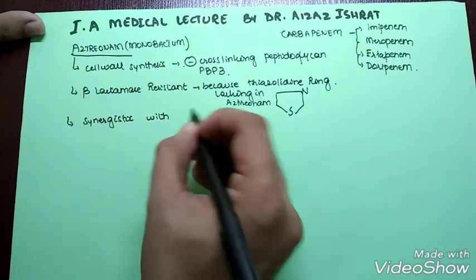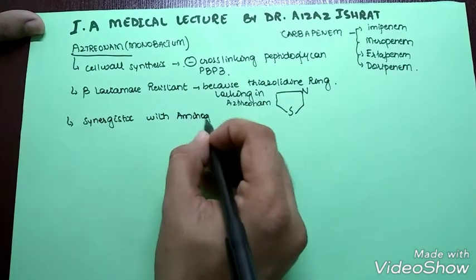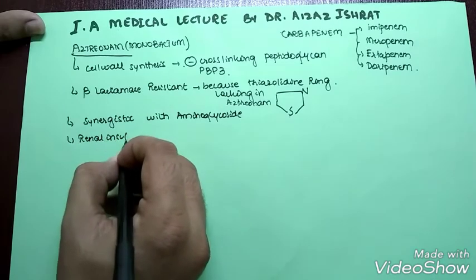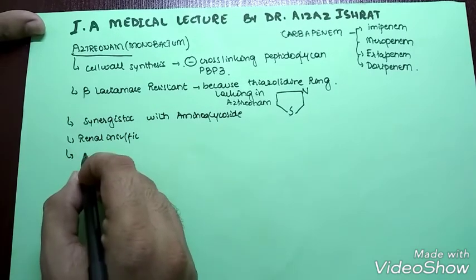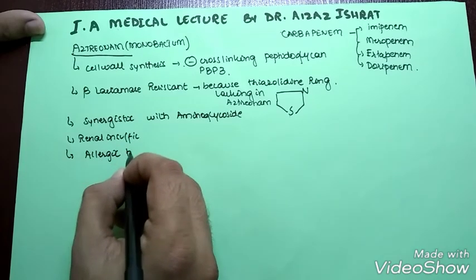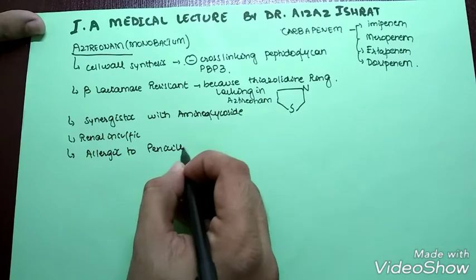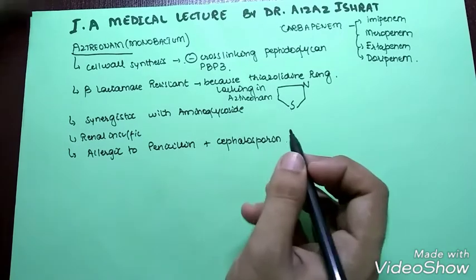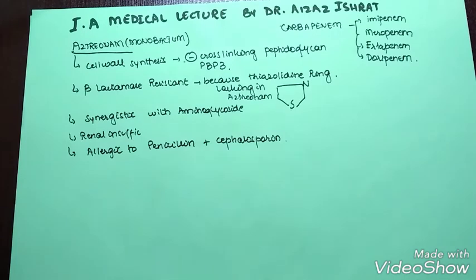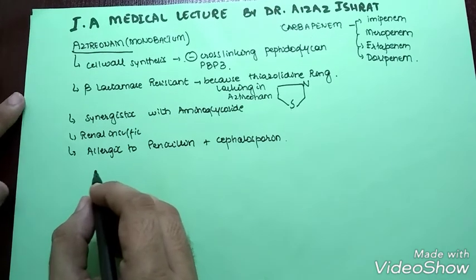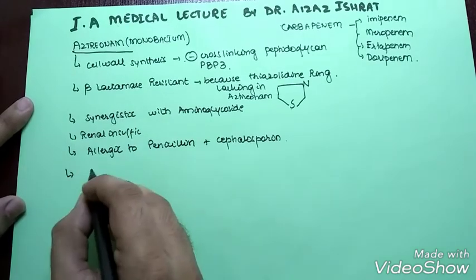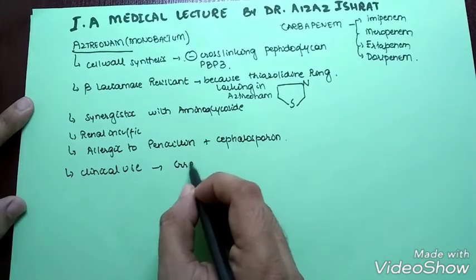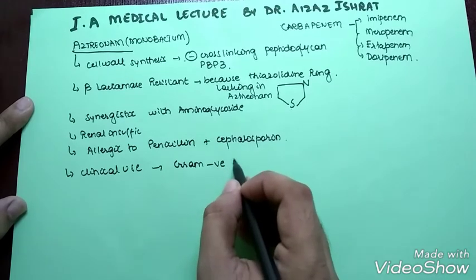What else is good about aztreonam? We know that it is synergistic with the aminoglycosides. It can be used in renal insufficiency. It can also be used if the patient is allergic to penicillin and cephalosporins. So we can use aztreonam, and these days we are using aztreonam and imipenem a lot.